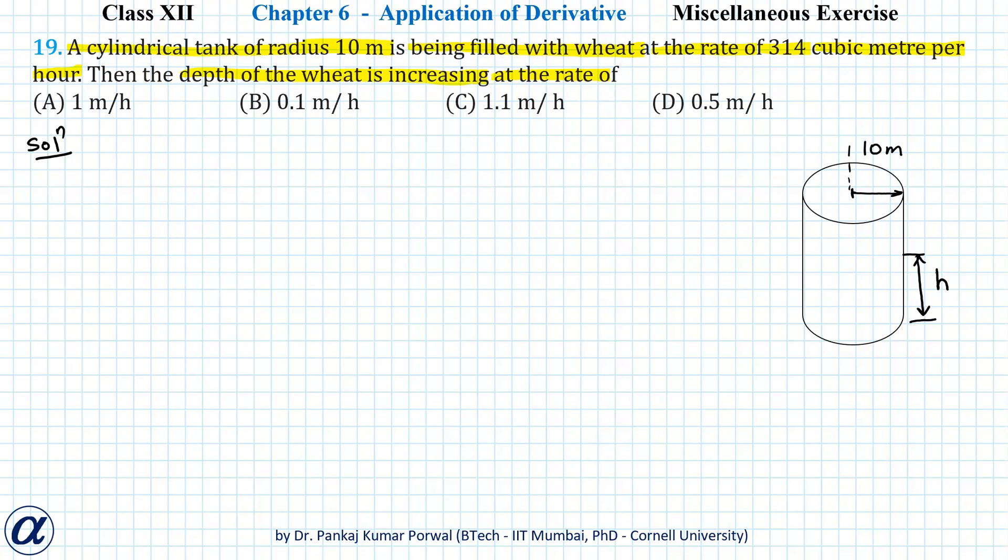So here I have my cylinder with radius 10 meters. At any given instant of time, the height of wheat in the cylinder is h, and the volume of wheat in the cylinder at that instant will be V = π(10)²h, or V = 100πh.